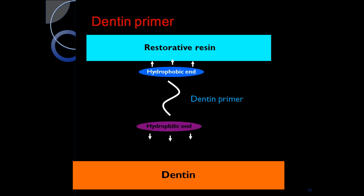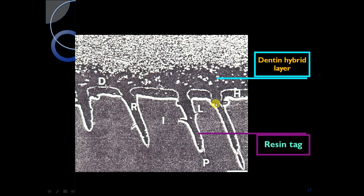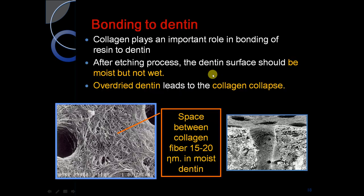When you apply the dentine primer, its hydrophilic part gets attached to dentine and its hydrophobic end gets attached to the restorative resin, forming the dentine hybrid layer. These are the resin tags. This is the dentine hybrid layer. Collagen plays an important role in bonding of resin to dentine. After etching, the dentine surface should be moist but not wet. Over-dry dentine leads to collagen collapse. The space between collagen fibers is 15 to 20 nanometers in moist dentine.